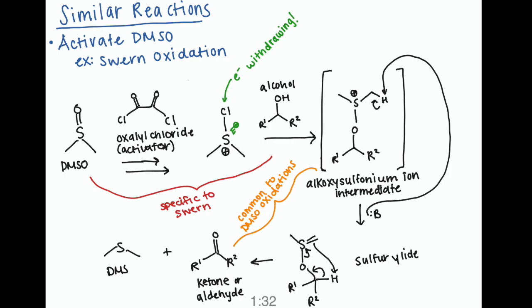And then when you react this molecule with alcohol, you get the alkoxysulfonium ion intermediate, which is common to all DMSO oxidations. So if you see additional DMSO oxidations, look out for this ion intermediate, and then you'll know those remaining steps.